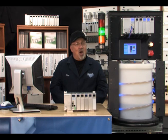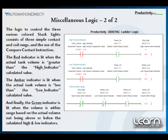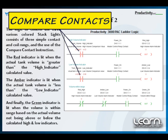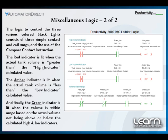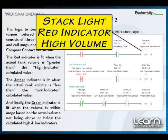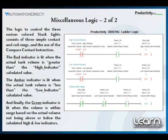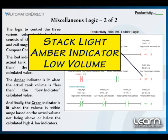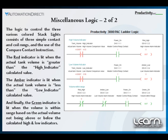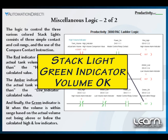With some additional simple ladder logic programming using the Productivity 3000's Compare Contacts, we can have the three colored stack lights indicating our process tank's volume status. The red indicator is lit when the actual tank volume value is greater than the tag name High Indicator, and the amber indicator is lit when the actual tank volume is less than the tag name Low Indicator. Finally, the green indicator is lit whenever the volume is neither greater than nor less than the actual tank volume.